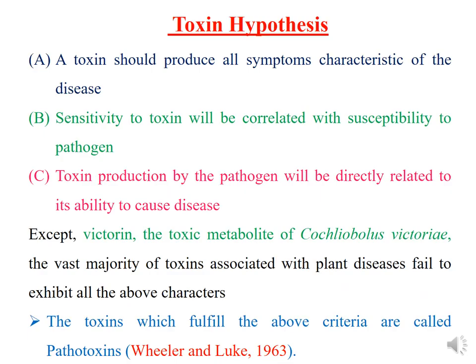Coming to the toxin hypothesis: this came into existence when the victorin toxin was discovered — the metabolite produced by Cochleobulus victoriae, which causes victorial blight of oat. This toxin hypothesis was proposed by Wheeler and Luke during the year 1963. According to this hypothesis, a toxin must obey three rules: it should produce all the symptoms characteristic of the particular disease; sensitivity to the toxin must correlate with susceptibility to the pathogen; and toxin production by the pathogen must be directly related to its ability to cause disease.